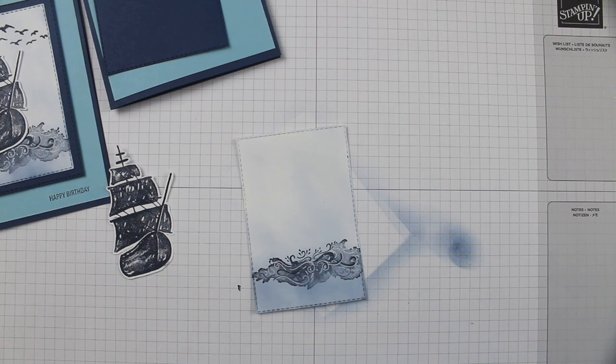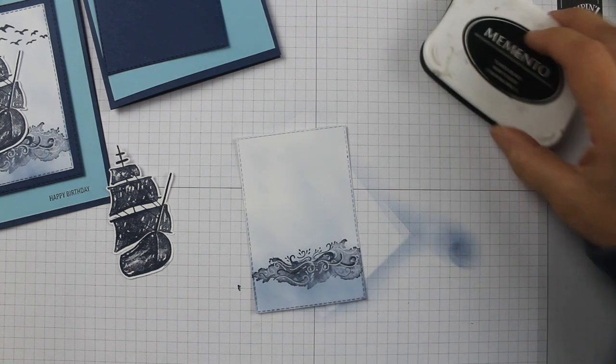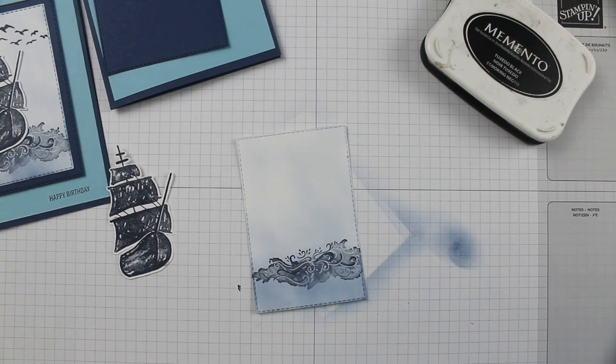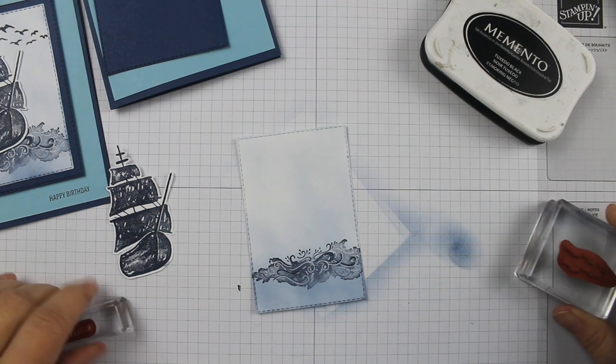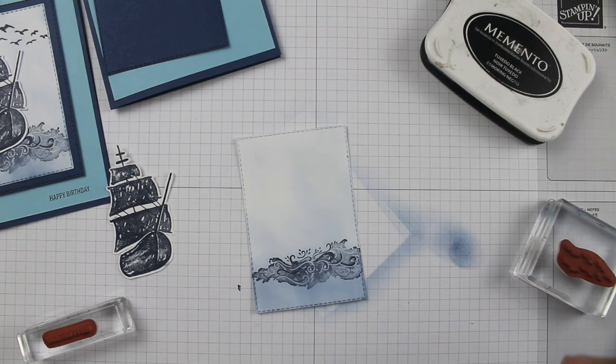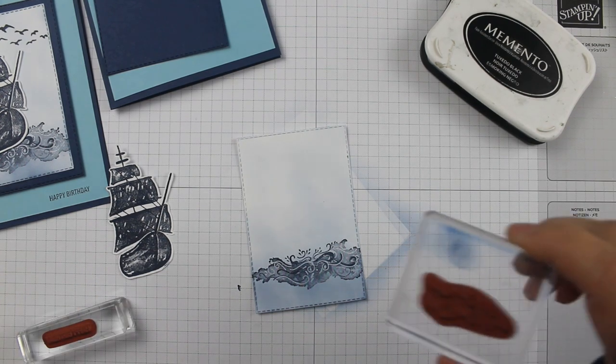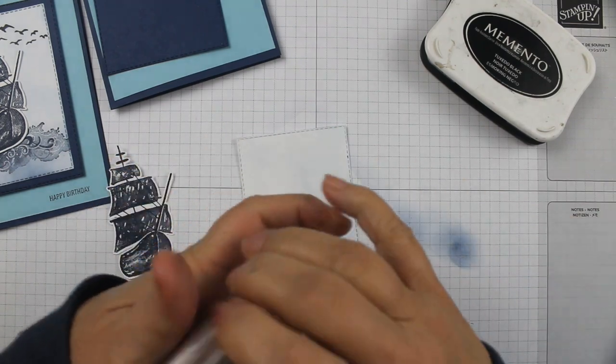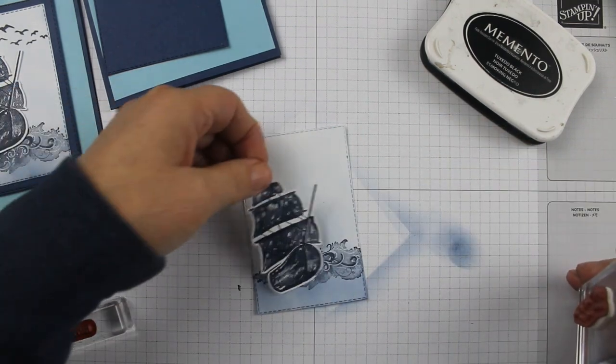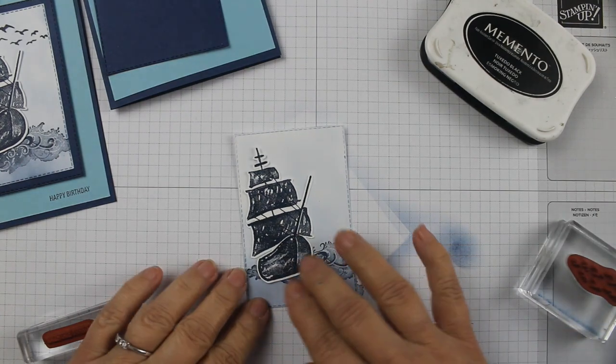Then I also took some Memento Black and I took the stamp from the stamp set that has the birds on it. You kind of want to look and see where your ship is going to be. I kind of liked it at an angle like that so it looks like it's going up over the waves.